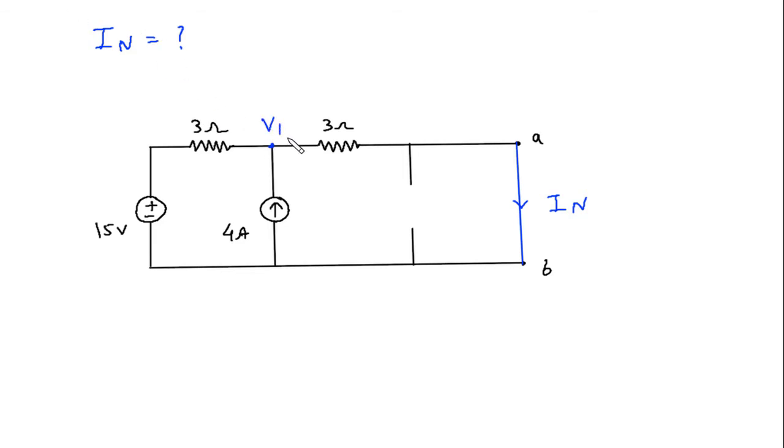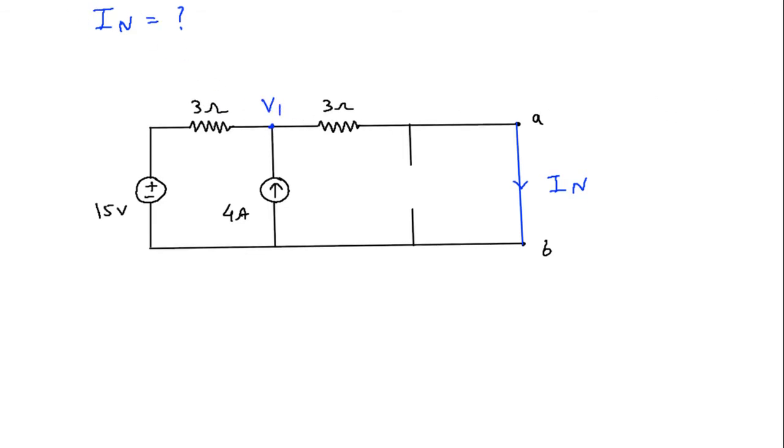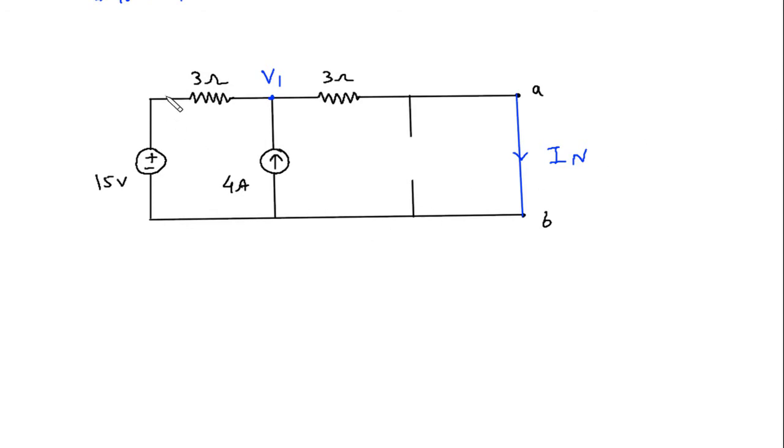Now let's assume this is node V1. Let's assume the direction of current. Let's say this is current I1 and this is current In.